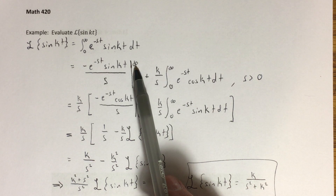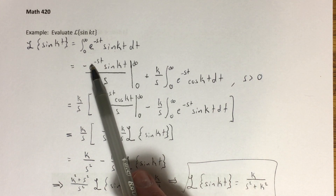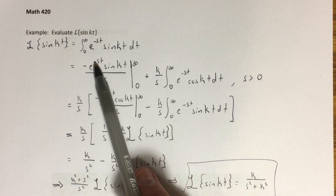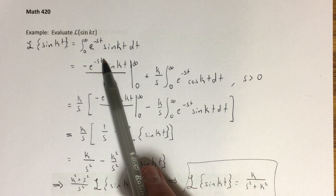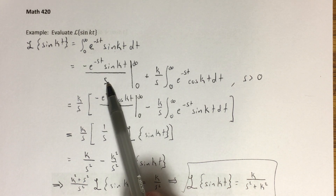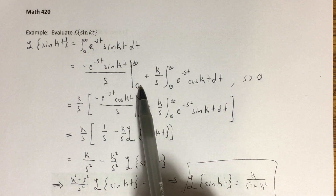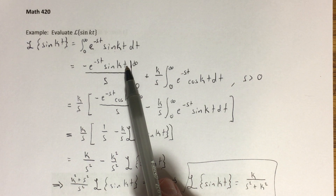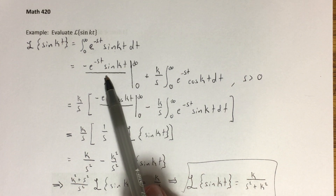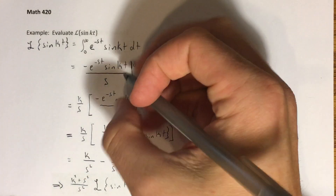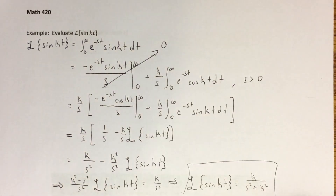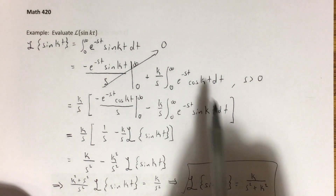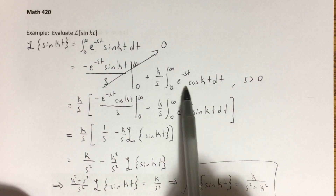Evaluating the boundary term: as t goes to infinity, e to the negative st drives the whole expression to zero. When you plug in zero, sine of zero is also zero. So this boundary term zeros out completely, leaving us with just the remaining integral.